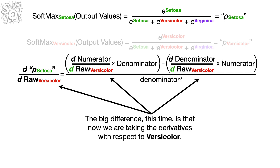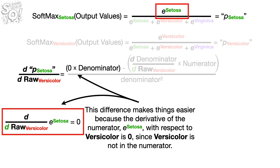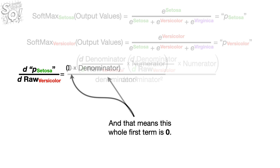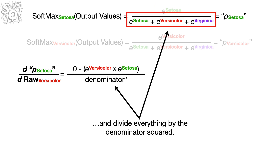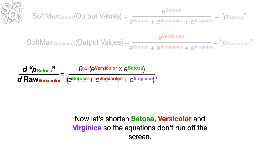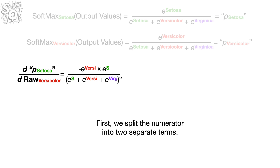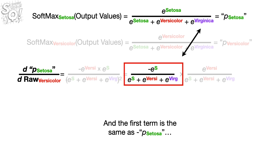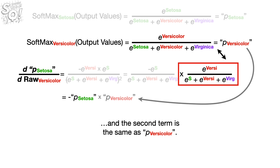The big difference this time is that now we are taking the derivatives with respect to Versicolor. This makes things easier because the derivative of the numerator — e raised to the raw value for Setosa — with respect to Versicolor is 0, since Versicolor is not in the numerator. That means the whole first term is 0. Then we subtract the derivative of the denominator with respect to Versicolor, times the numerator, and divide everything by the denominator squared. Now let's shorten Setosa, Versicolor, and Virginica. We split the numerator into two separate terms: the first term equals the negative predicted probability for Setosa, and the second term equals the predicted probability for Versicolor.